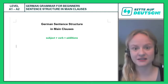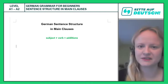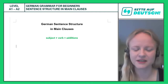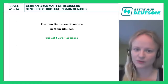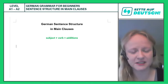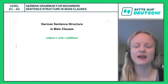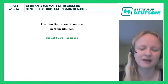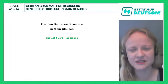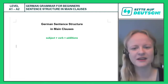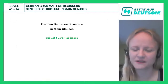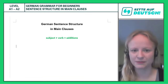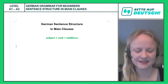Even the position of the subject and the additions can be switched depending on what you would like to emphasize. In the English sentence 'I read the book,' 'I' is the subject, 'read' is the verb in second position, and 'the book' is a direct object — an addition that comes after the verb. In English you cannot say 'the book read I,' but in German you can if you want to emphasize that it is the book you are reading and not the newspaper. So subject and additions might be interchangeable, but the position of the verb in the main clause is not flexible — it is fixed in second position.